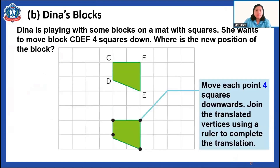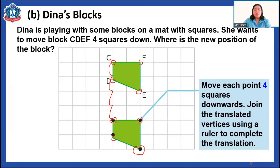Dina is playing with some blocks on a mat with squares. She wants to move block CDEF four squares down. Let's focus on point C — move four squares downward: one, two, three, four. Point F will also move here, point E will be moved here, and point D will be moved here. As you observe, there is no change in the size of the shape or the orientation, because all points are moved the same number of squares.